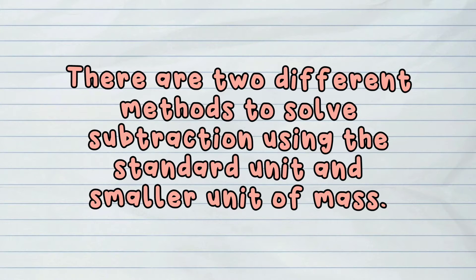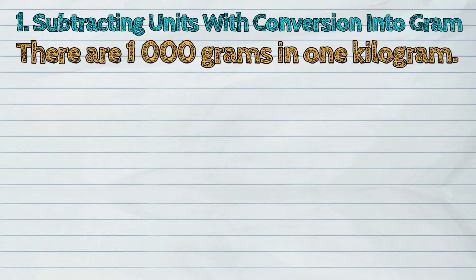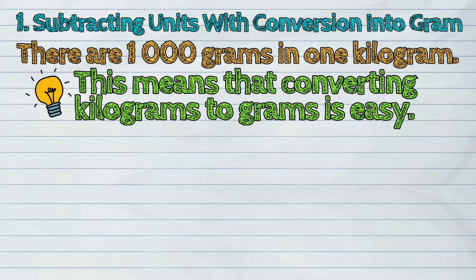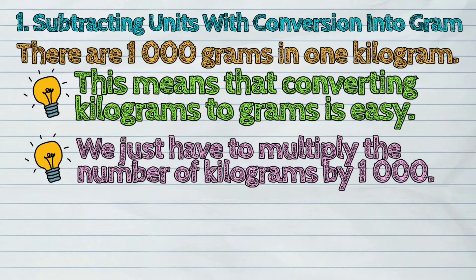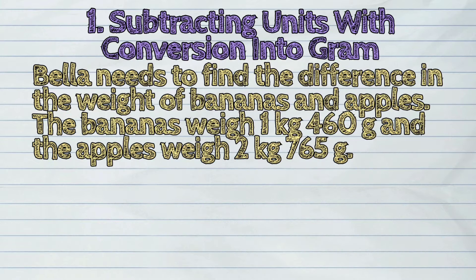There are two different methods to solve subtraction using the standard unit and smaller unit of mass. First, subtracting units with conversion into grams. As a review, there are 1,000 grams in one kilogram. Converting kilograms to grams is easy — we just multiply the number of kilograms by 1,000. Note that grams are referred to as the base unit, meaning we usually start in grams and convert to kilograms. Let us study this example.